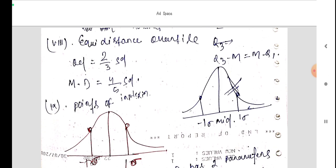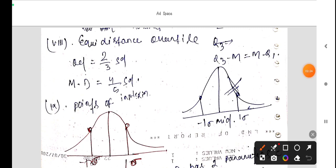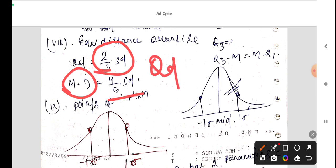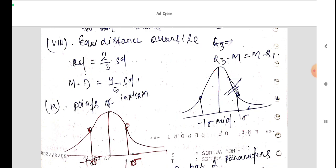Equidistance quartile. Quartile deviation is equal to 2 third of the standard deviation. And mean deviation is equal to 4 fifth of the standard deviation. In normal distribution properties, quartile deviation equals 2 upon 3 of standard deviation, and mean deviation equals 4 by 5 of standard deviation.